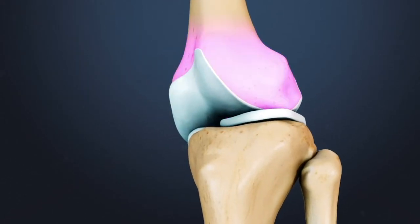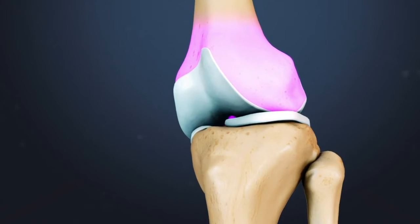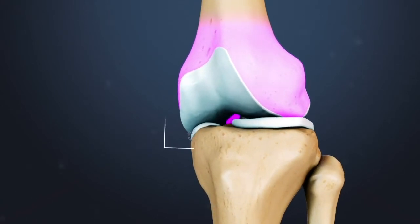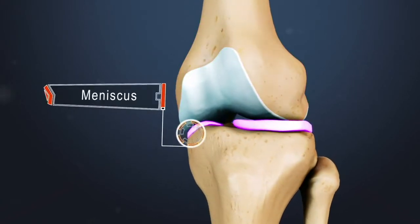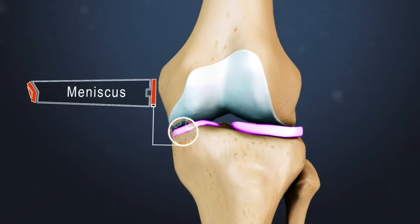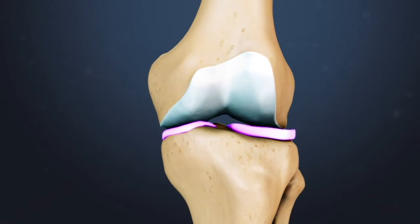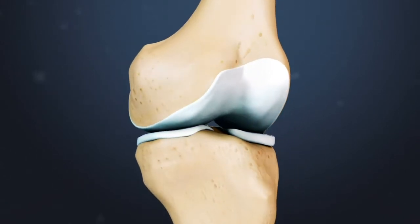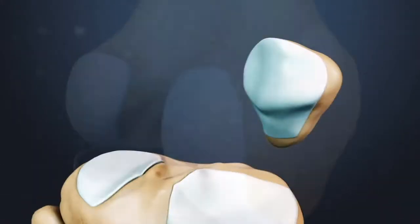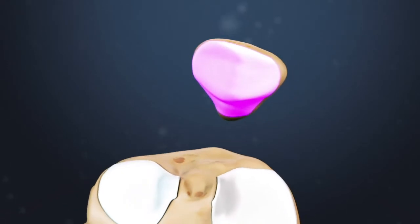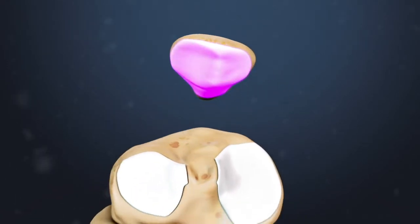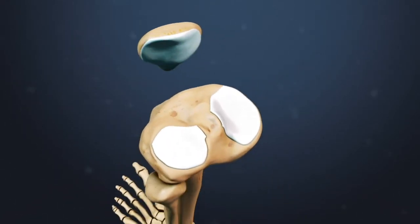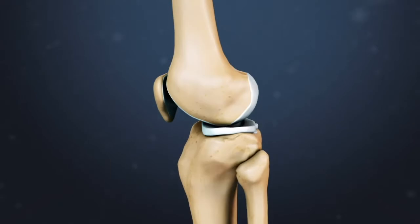Articular cartilage covers the condyle, the curved end of the femur and tibia. A rubbery segment of cartilage, called the meniscus, is located between the femur and tibia and acts as a shock absorber. Articular cartilage also lines the underside of the patella, which floats above the spot where the other leg bones meet.